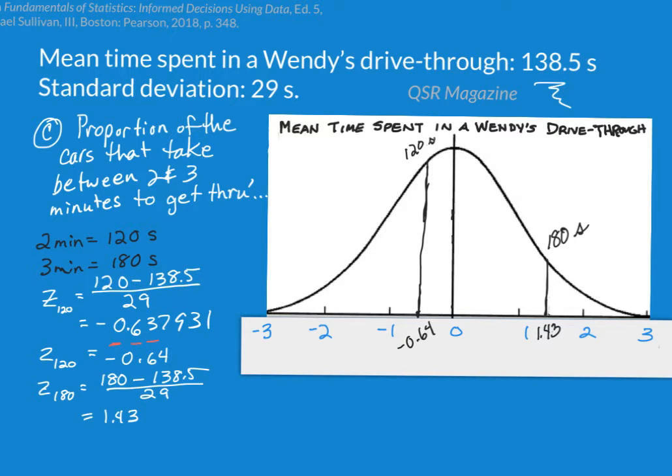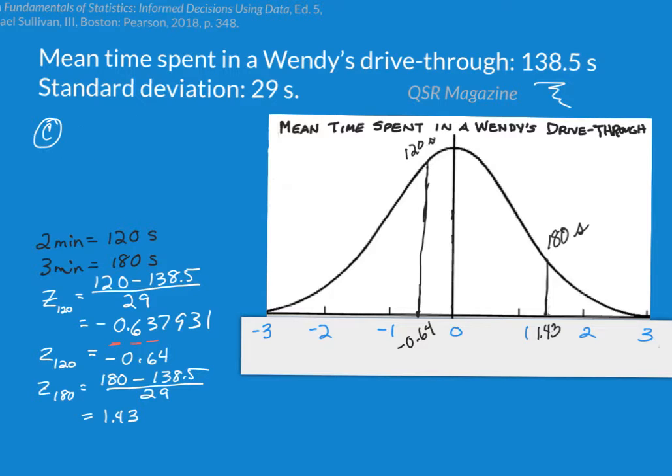Now I need to do some more calculating and more thinking about this. So I'm going to rewrite this question here, the proportion of the cars that take between two and three minutes to get through the drive-thru will be exactly equal to the probability that a random car takes between two and three minutes to go through the drive-thru. So for now, I'm just going to rewrite this as a probability. The cars take between two and three minutes, which we know is between 120 and 180 seconds.